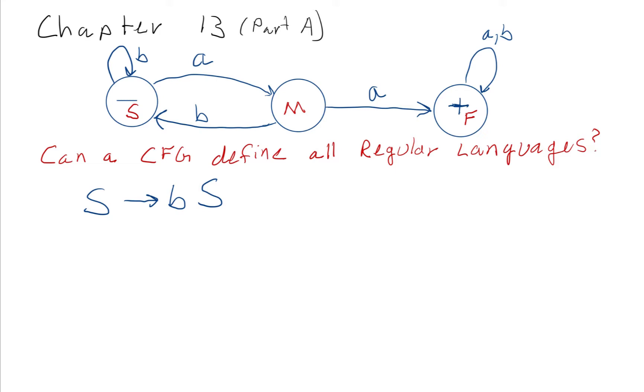Now, if we're in the start state and we read an A, then we go to state M. If we're in state M and we read a B, we go back to state S. And if we read an A, we go to state F.